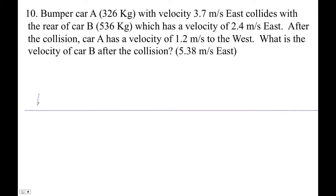Okay, so bumper car A going east at 3.7 meters per second. I'm going to make to the right east positive as well, so 326 kilograms. Here's bumper car A. Car B is 536 kilograms going 2.4 meters per second east, so that's positive.